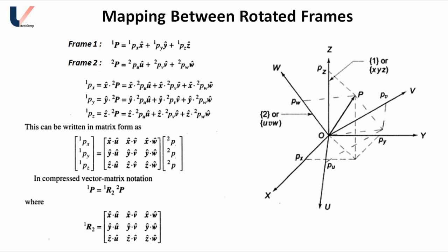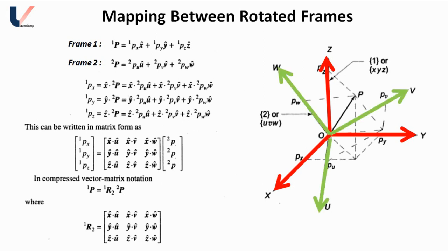Consider two frames: frame 1 with axes X, Y, and Z shown by the red lines, and frame 2 with axes U, V, and W shown by the green lines. Both frames have a common origin. A point P can be defined with respect to frame 1 as 1P = 1Px·x̂ + 1Py·ŷ + 1Pz·ẑ, and with respect to frame 2 as 2P = 2Pu·û + 2Pv·v̂ + 2Pw·ŵ. Suppose we have the description of P in frame 2 and want to find the description of P in frame 1.